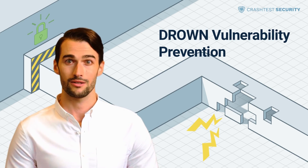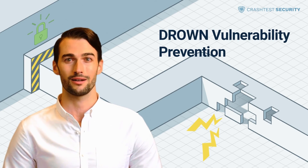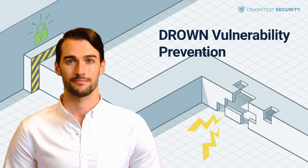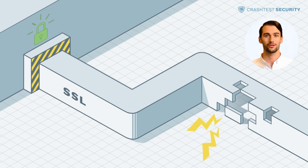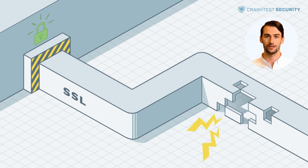To learn more about preventing DROWN and other similar security vulnerabilities, refer to the guide on securing TLS configuration. Try Crash Test Security today to discover how it integrates into your development stack for efficient, automated vulnerability scanning — the trial is free. Also, subscribe to the Crash Test Security channel to get more information about the most significant web security threats, their prevention, and how to use the Crash Test Security Suite. Thank you for watching and see you in our next video.